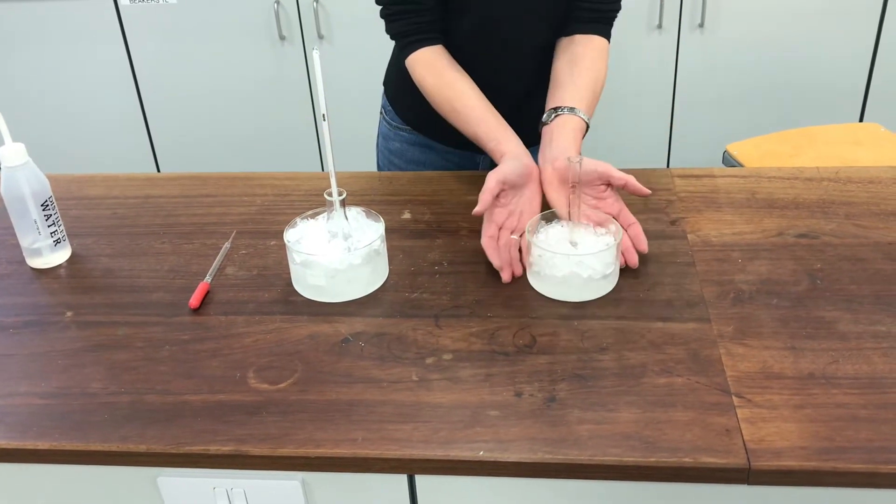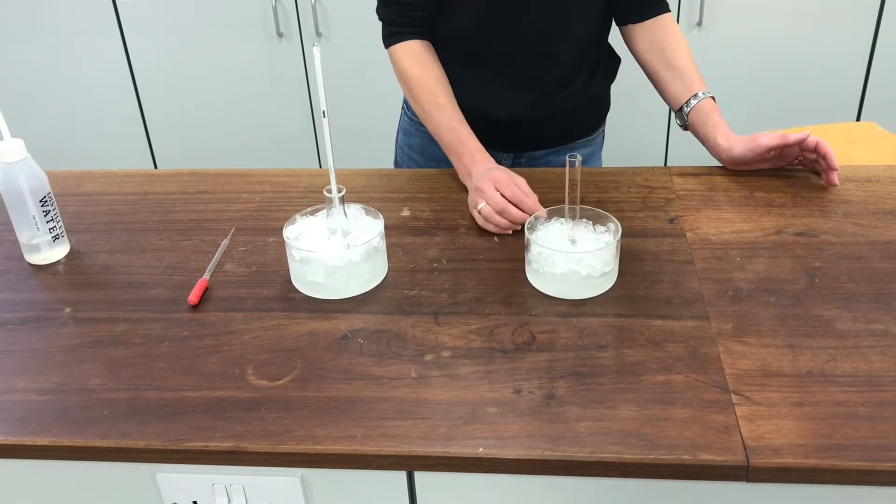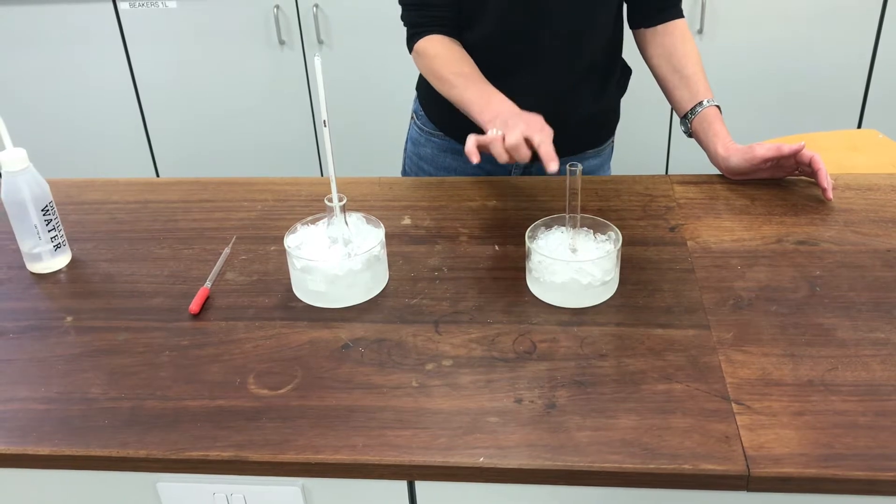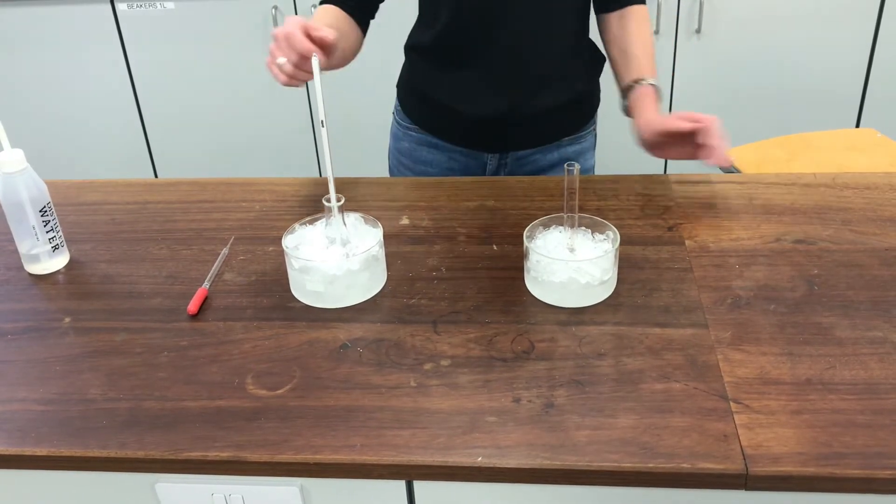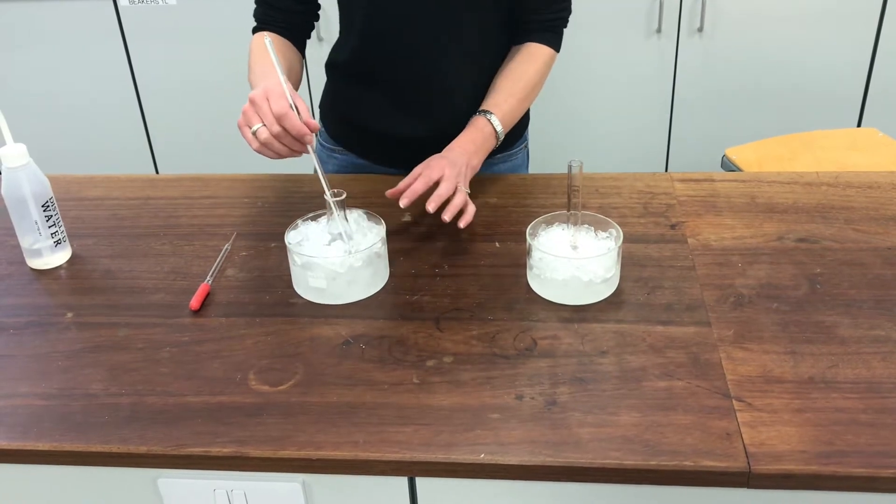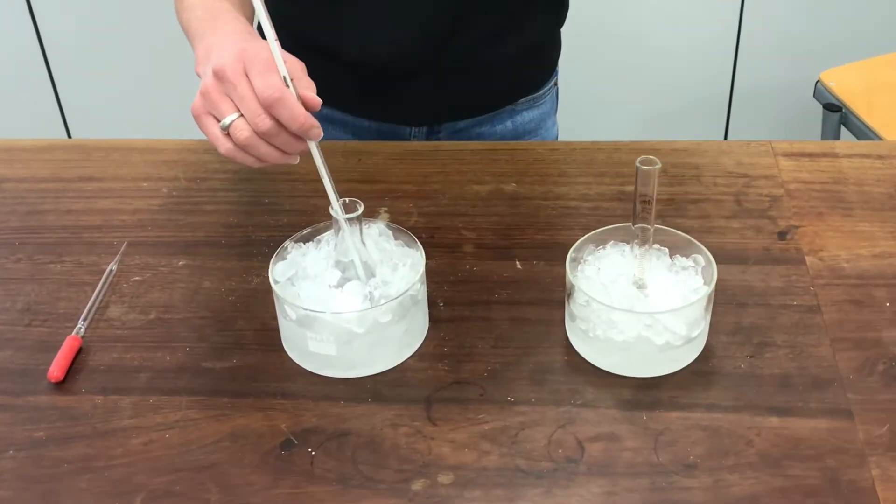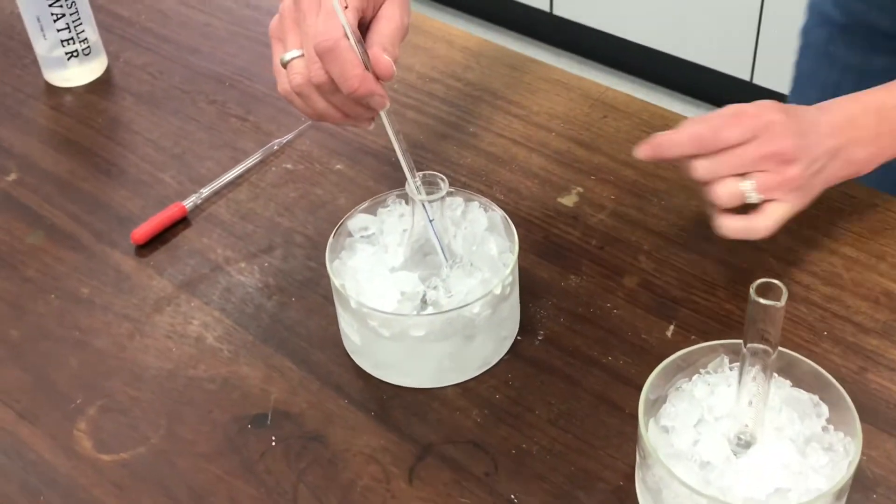So I've got first of all here a nitrating mixture. This is mixed up from equal amounts of concentrated nitric acid and concentrated sulfuric acid. I've got a total of 4 cubic centimeters of that nitrating mixture in this measuring cylinder. In this vessel over here, this conical flask, I've got the methyl benzoate. And I've already added 5 cubic centimeters of concentrated sulfuric acid to this one as well.